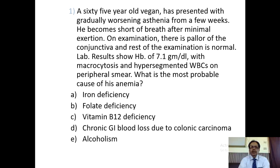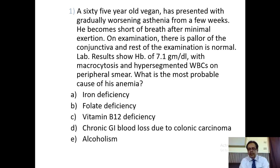MCQ 1: A 65-year-old vegetarian has presented with gradually worsening asthenia from a few weeks. He becomes short of breath after minimal exertion. On examination, there is pallor of the conjunctiva and the rest of the examination is normal. Lab results show hemoglobin of 7.1 gram per deciliter with macrocytosis and hypersegmented WBCs on peripheral smear. What is the most probable cause of anemia? Options: iron deficiency anemia, folate deficiency anemia, vitamin B deficiency anemia, chronic GI blood losses or alcoholism.